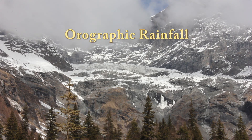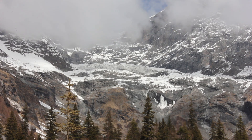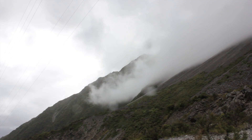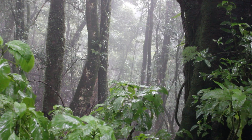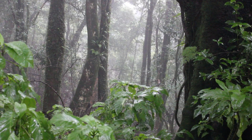Orographic precipitation occurs where air masses are forced to rise over mountain ranges. The air cools as it is forced upwards. As it cools, the water vapour begins to condense and finally produces rain. As a consequence, the windward side of the mountain range is wetter than the leeward side, where there is a rain shadow area.